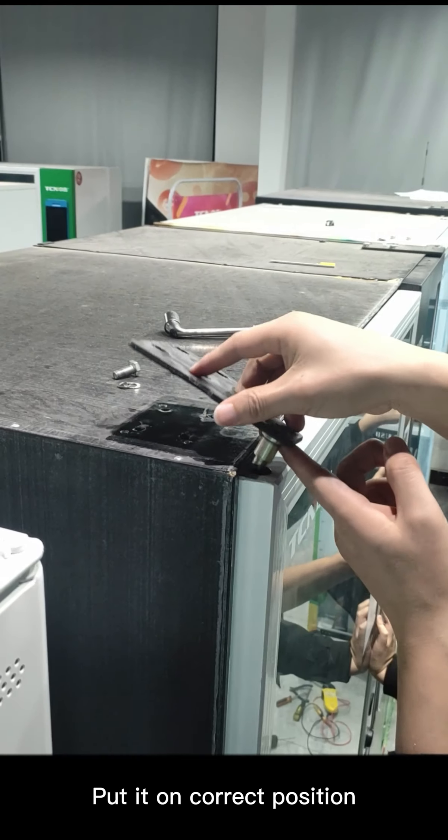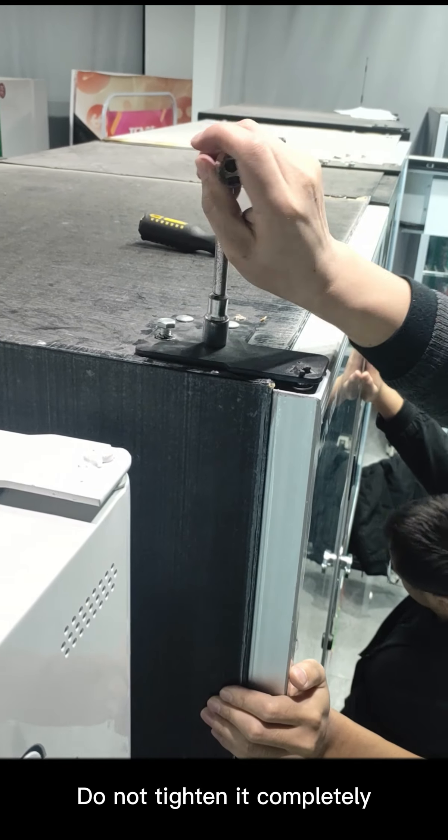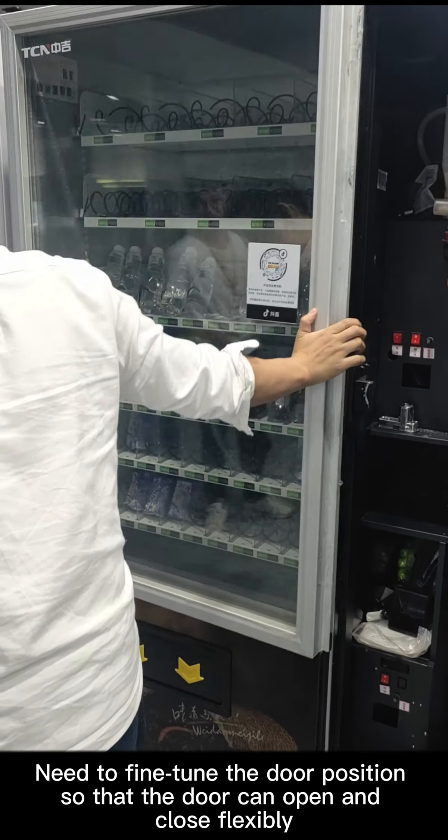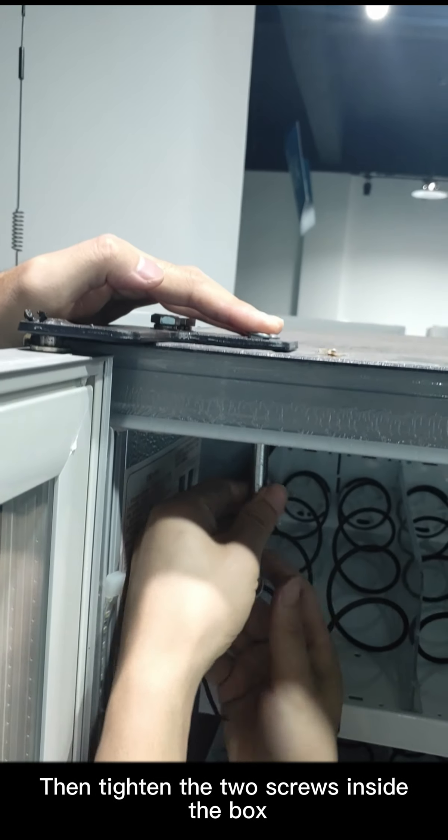Put it in the correct position and then tighten the upper two screws. Do not tighten it completely - you need to fine tune the door position so that the door can open and close flexibly. Then tighten the two screws inside the box.